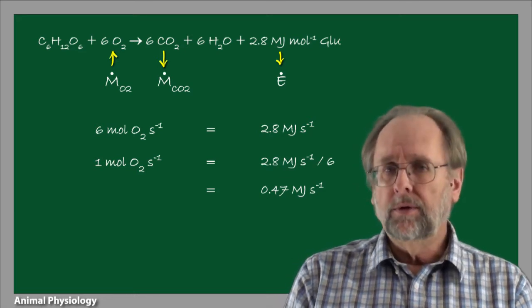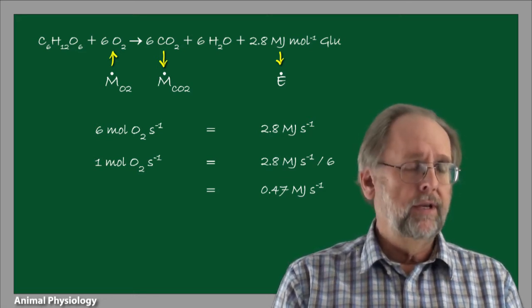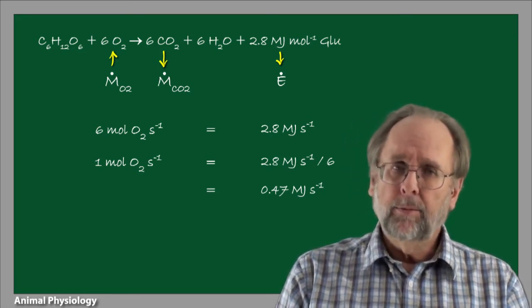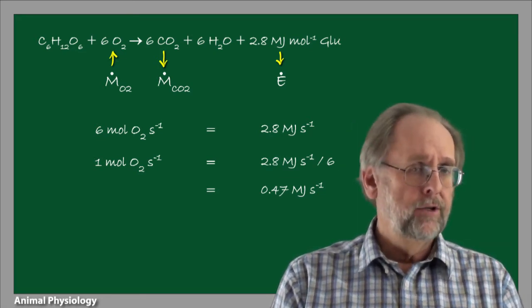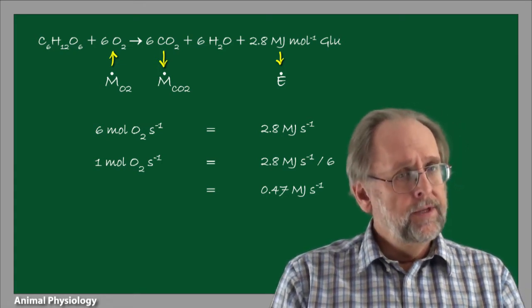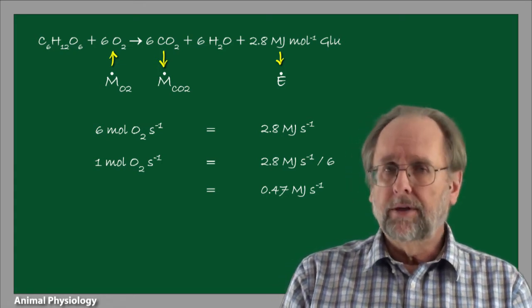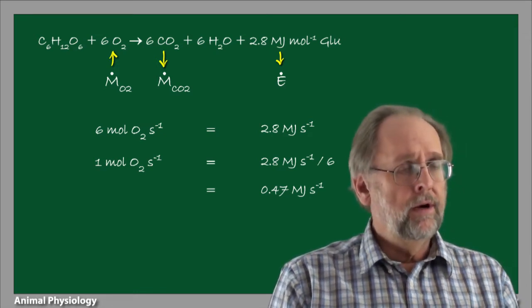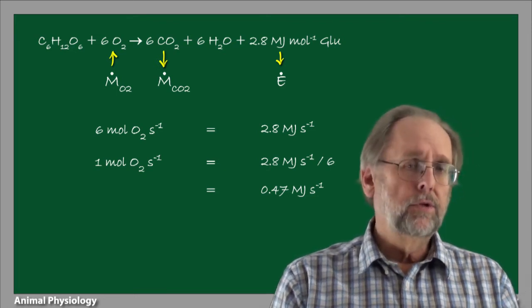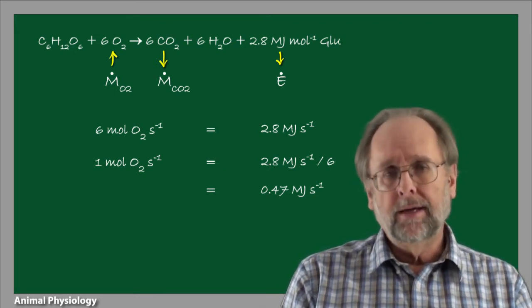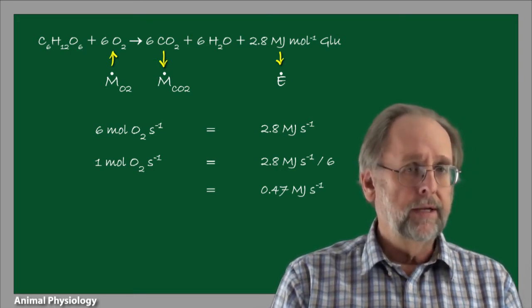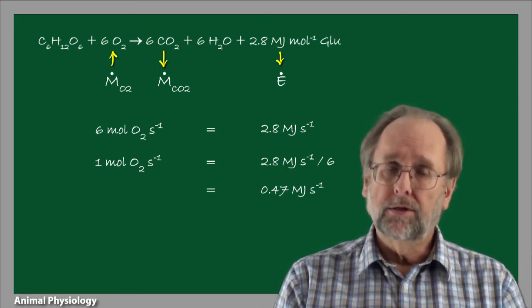That's a really high value, and we're only using this number to illustrate the calculation. For a more realistic comparison, the typical metabolic rate of an adult human is about 100 watts. This is the basis of indirect calorimetry: by measuring an oxygen consumption rate, the stoichiometry of glucose oxidation provides a reliable way of estimating the energy production rate — the metabolic rate.